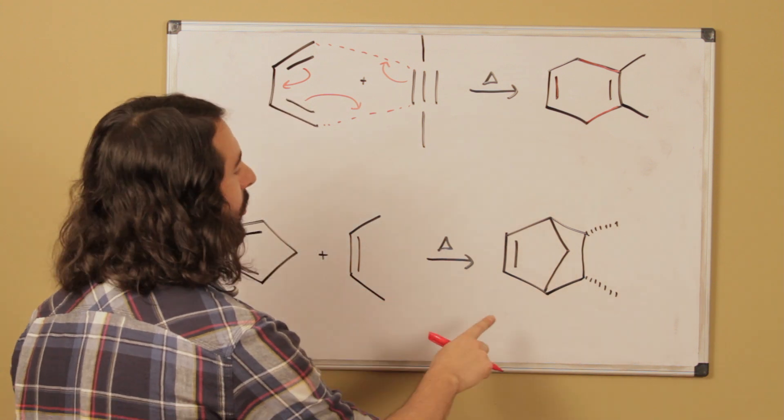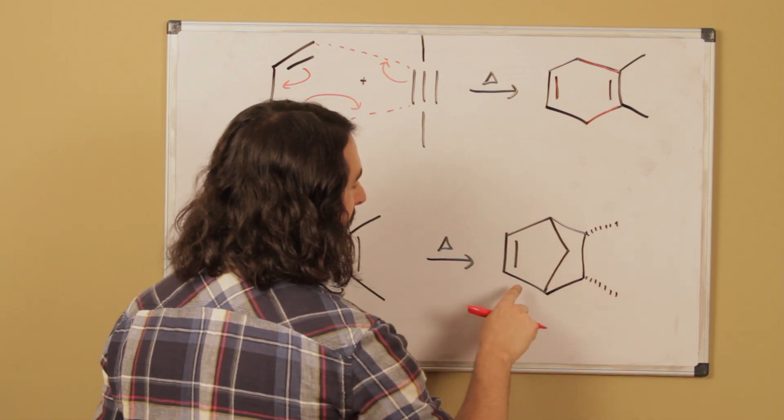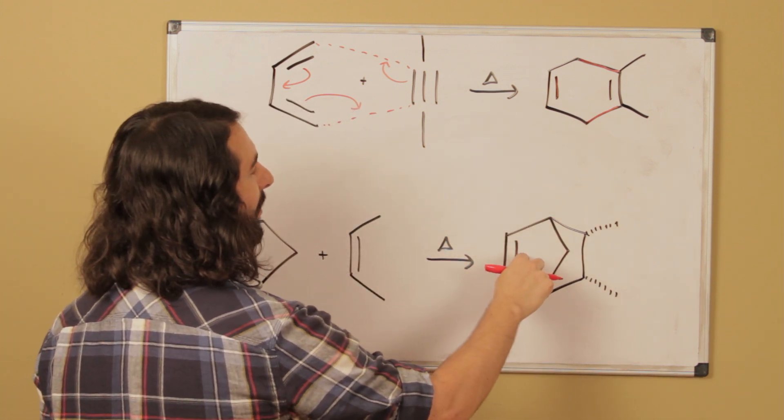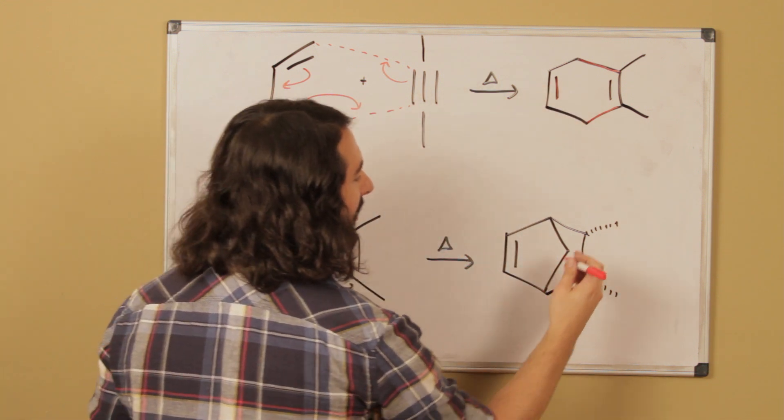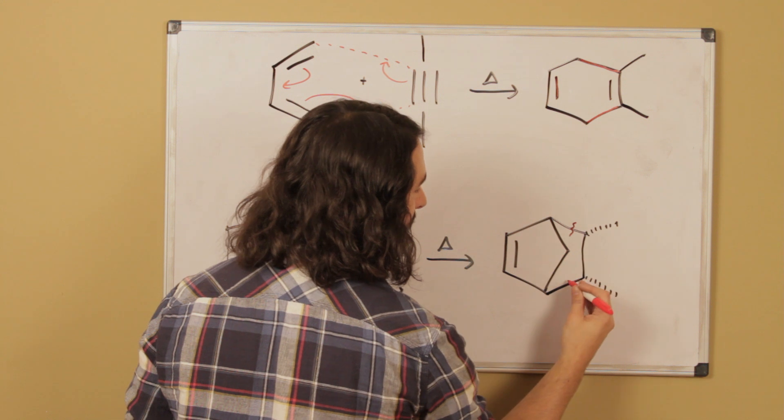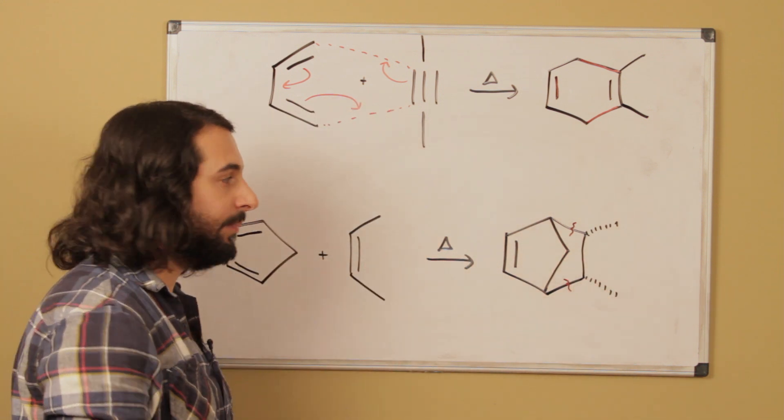And what we need to be able to do is identify the six membered ring and then see that since this pi bond is here, right remember we're always getting a pi bond, then it must be these two sigma bonds that we break and therefore pull apart.